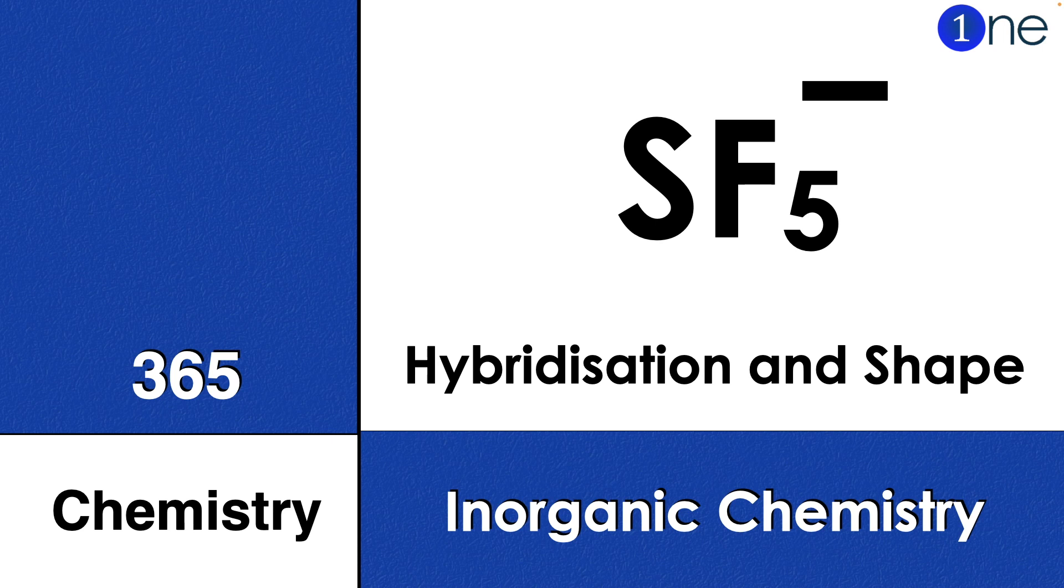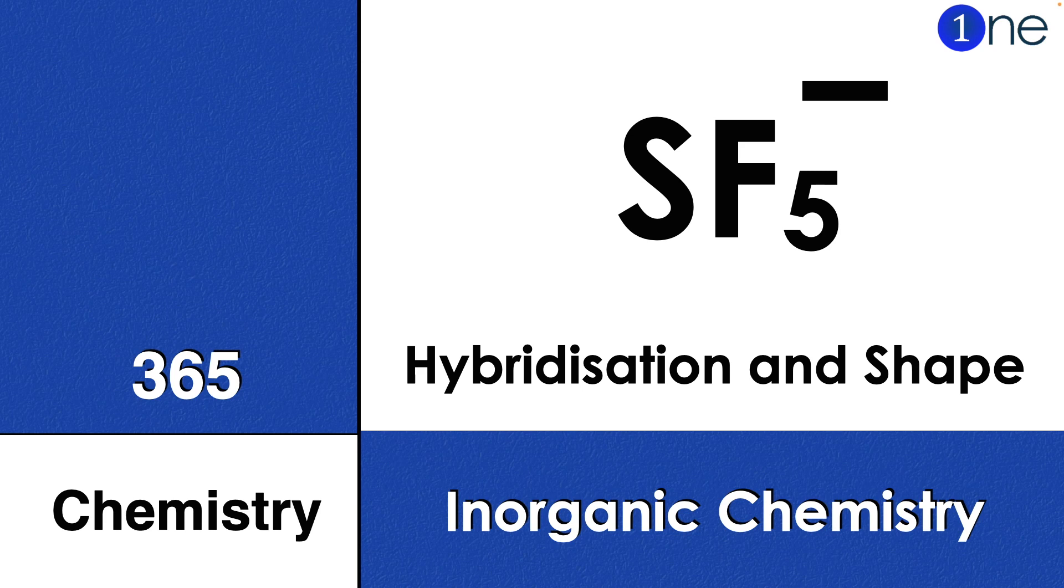Welcome to One Chemistry. This is 365 Chemistry series, inorganic question for you. Here sulfur pentafluoride anion is given. You have to find the hybridization and shape of it.